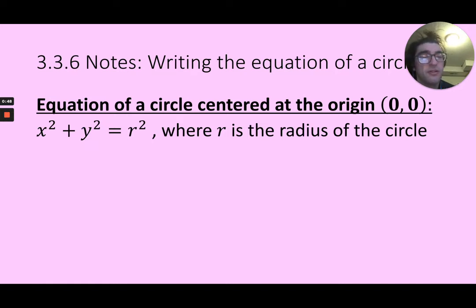So on a graph for a circle that's centered at the origin 0, 0, I can use this equation. x squared plus y squared equals r squared, where r is just the radius.